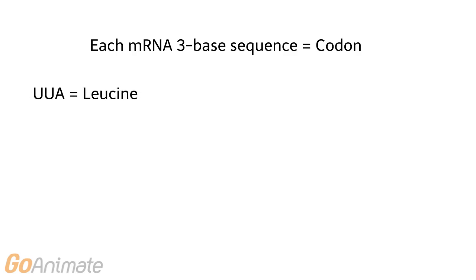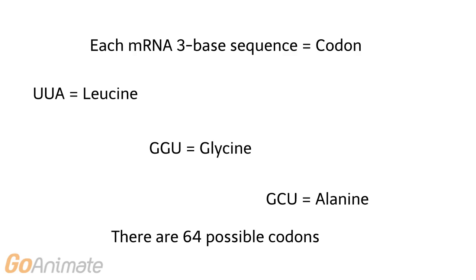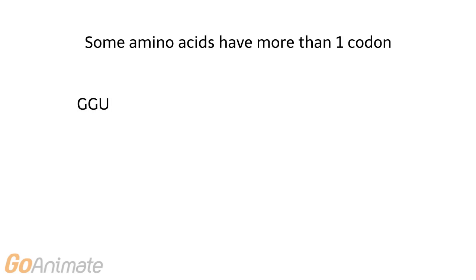Each three-base sequence on mRNA is known as a codon. For example, the codon UUA codes for the amino acid leucine. GGU codes for glycine, and GCU codes for alanine. There are 64 possible codons. There is some redundancy in the codons — for example, the amino acid glycine has four codons.